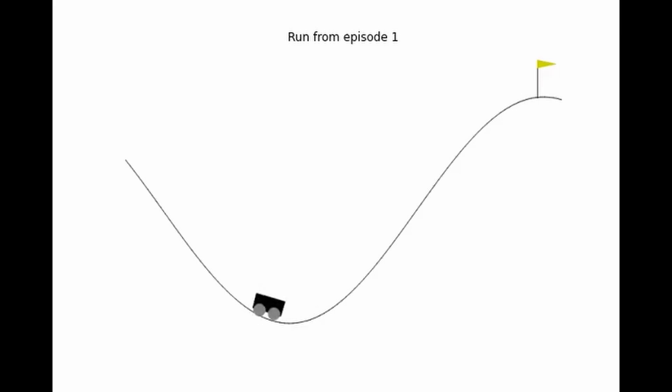This is the mountain car problem. The car at the bottom of the hill is controlled by a reinforcement learning algorithm. The goal is to get the car to the top of the hill, but the caveat is that the car does not have enough energy to climb the hill by itself. It needs to roll back and forth to gain some momentum to eventually get to the flag in the top right corner.